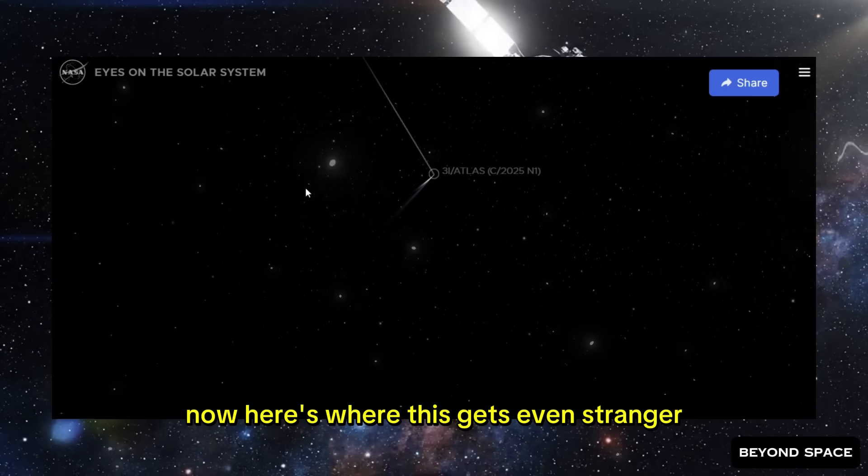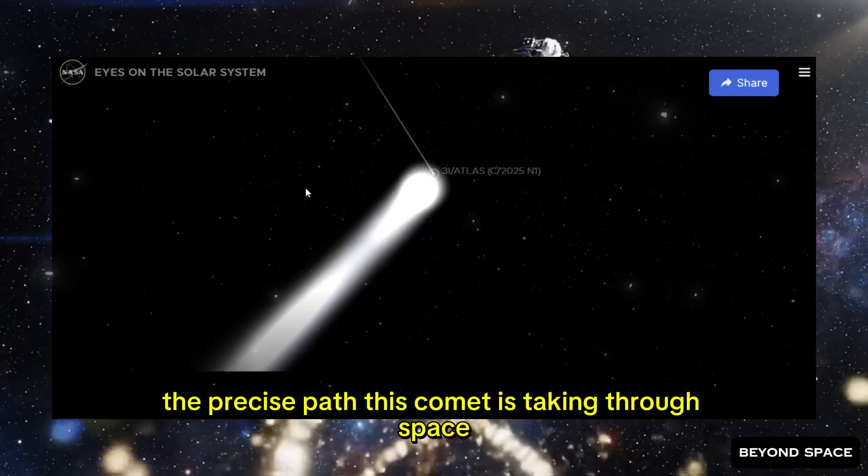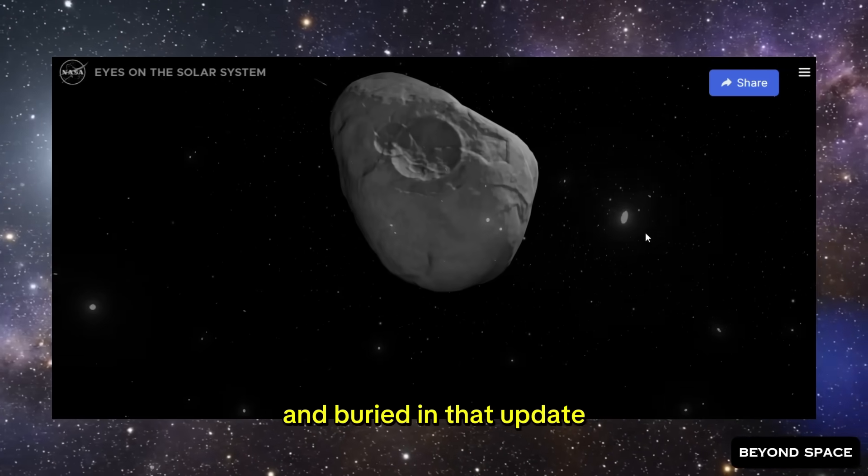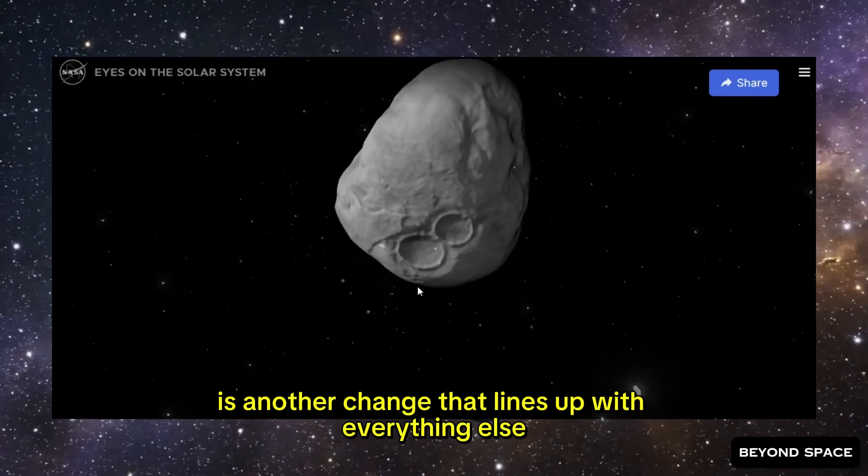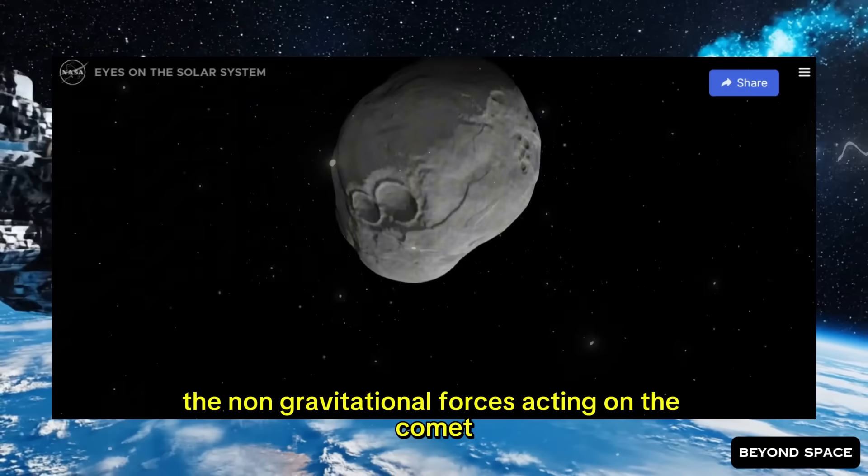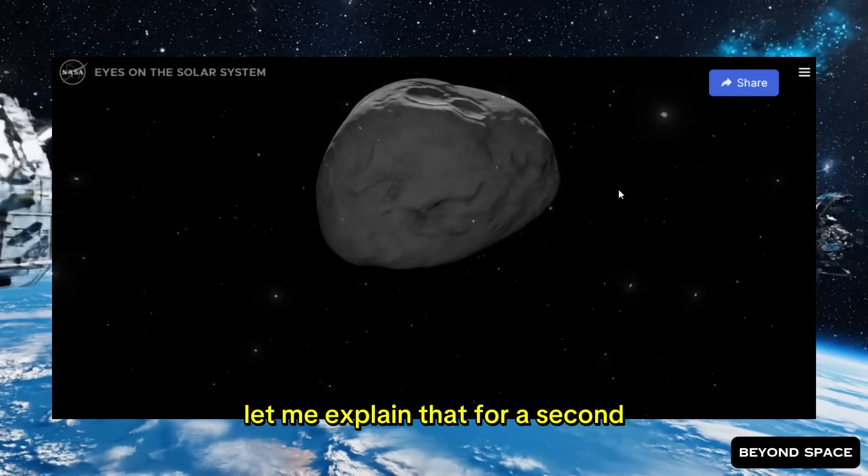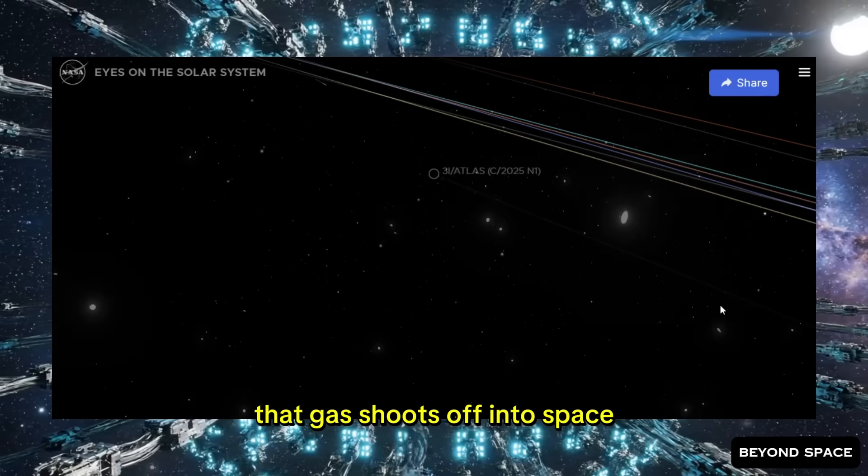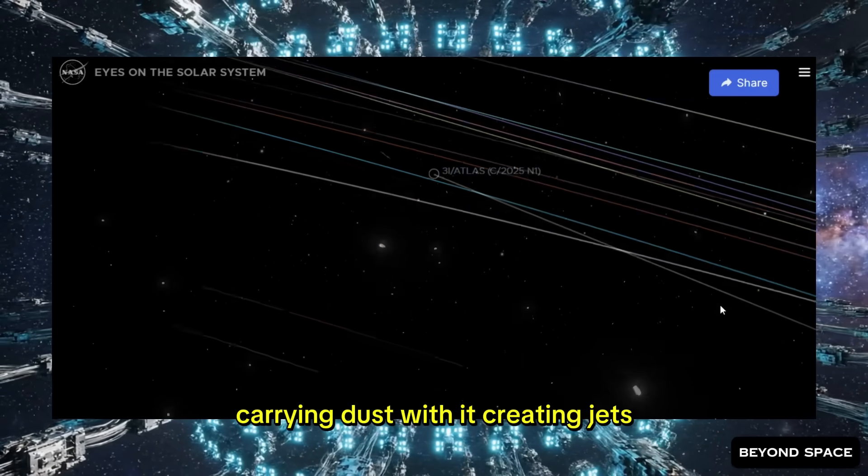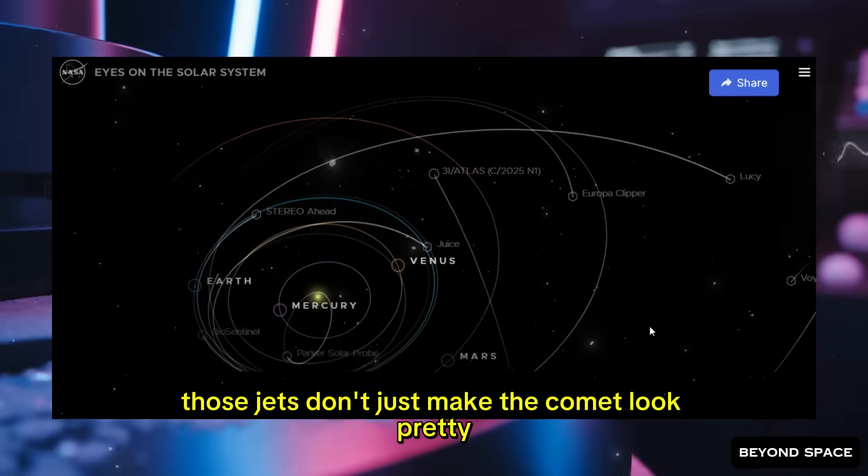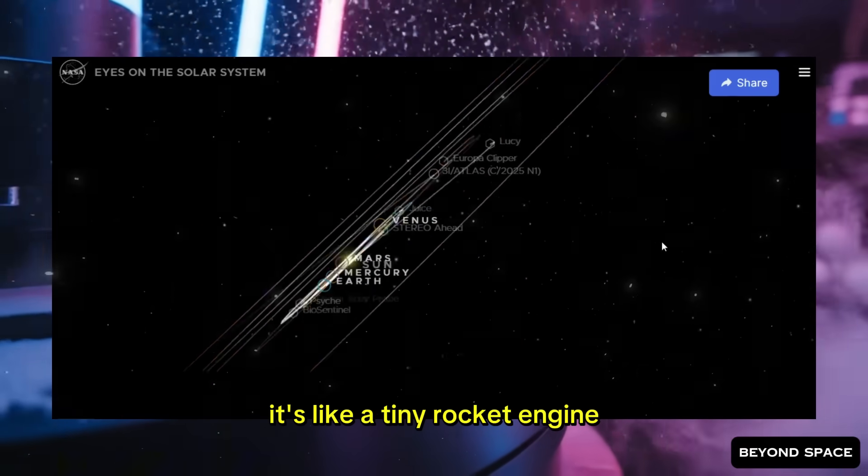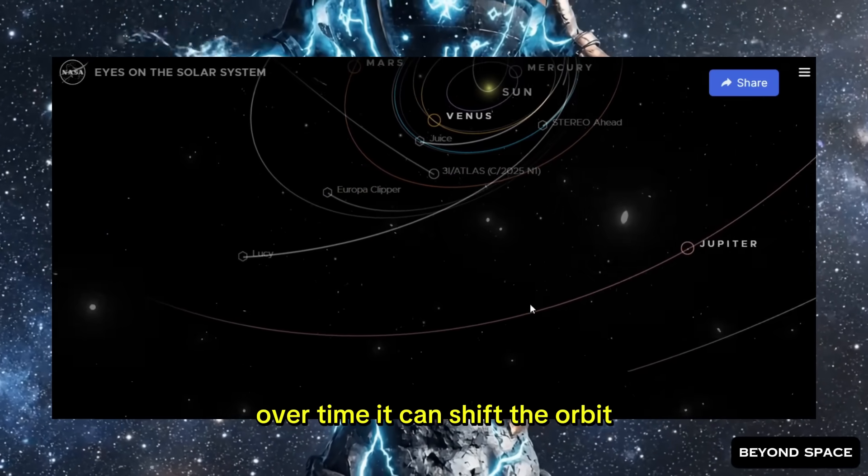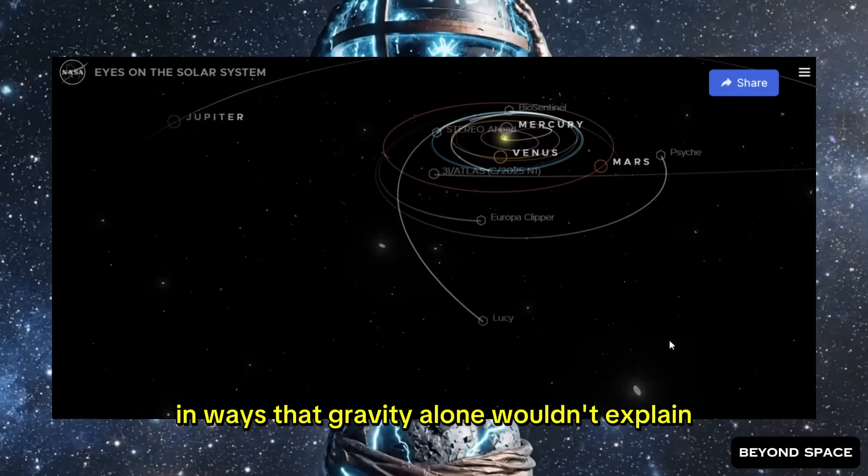The orbital analysts, the people who calculate the precise path this comet is taking through space, they released an updated orbit solution today. When a comet gets close to the sun, it heats up, and ice on the surface turns into gas. That gas shoots off into space, carrying dust with it, creating jets. Those jets don't just make the comet look pretty, they actually push on the comet. It's like a tiny rocket engine. That push, even though it's small, affects the comet's trajectory. Over time, it can shift the orbit in ways that gravity alone wouldn't explain.